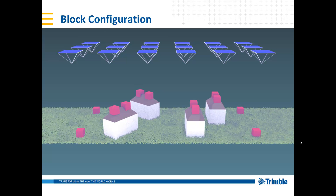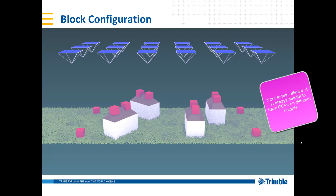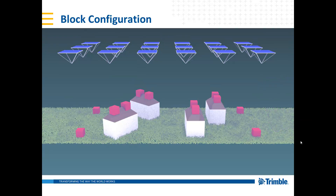The same principle applies in the opposite direction — if control points are on top of a building or there are hills. As long as the control points are not all on one equal height but are on different heights and can be measured from different images, we can extract the focal length very accurately. This is a very important part of our block adjustment, and having the focal length well established means the camera acts as a true measurement instrument in UAV projects.